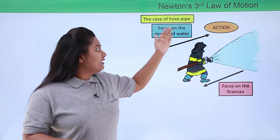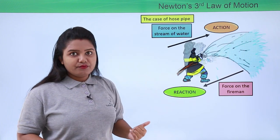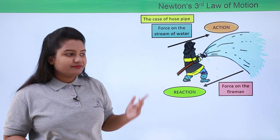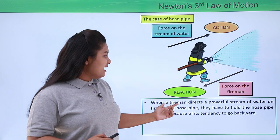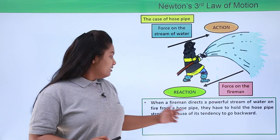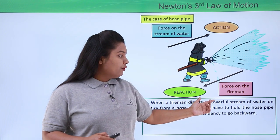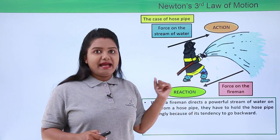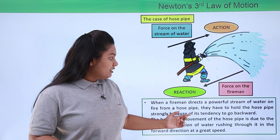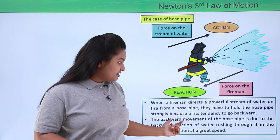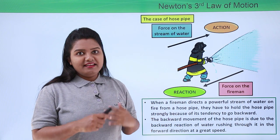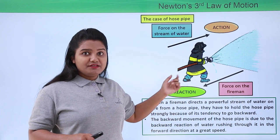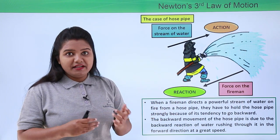The reaction force is the reason the fireman has to hold the hose pipe intact with a lot of effort. When a fireman directs a powerful stream of water on a fire from a hose pipe, the hose pipe has a tendency to go backward. This backward movement is due to the backward reaction of water rushing out of it at a very large speed, requiring the fireman to exert considerable energy to hold it in place.